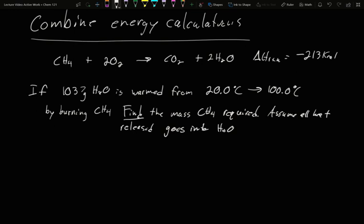Separately, we're heating up water in a pot. I have 1037 grams of water in a pot. It's going to be warmed from 20 degrees Celsius up to 100. This is what we burn methane, natural gas, for on the stove.